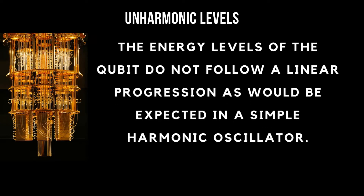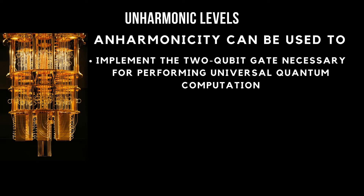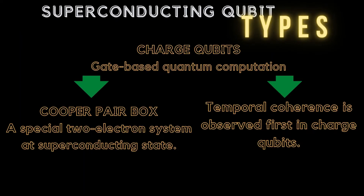Additionally, the energy levels of superconducting qubits are unharmonic, meaning that the spacing between the energy levels is not equal. This unharmonicity is a desirable property for two-level quantum systems used as qubits, as it allows for better control over the behavior of the device and reduces the potential for errors in quantum computations.